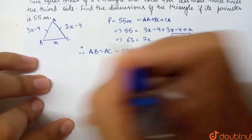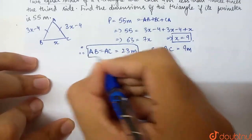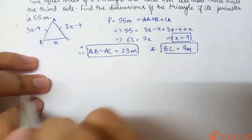And the third side BC will be 9 meters. Hence, we will get our dimensions of the triangle: AB and AC are 23 meters, BC is 9 meters.